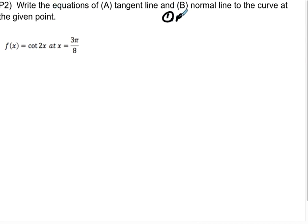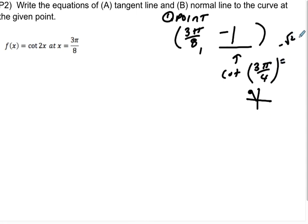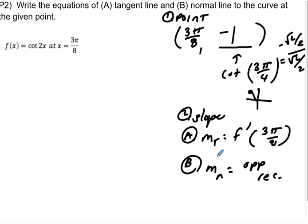For Practice 2, same idea — need a point and a slope. The point is 3 pi over 8 comma blank. Plugging in gives cotangent of 3 pi over 4. At 3 pi over 4, we're in quadrant 2 where x is negative and y is positive, so tangent and cotangent equal negative 1. So the point is 3 pi over 8 comma negative 1. The tangent slope is f prime evaluated at 3 pi over 8.